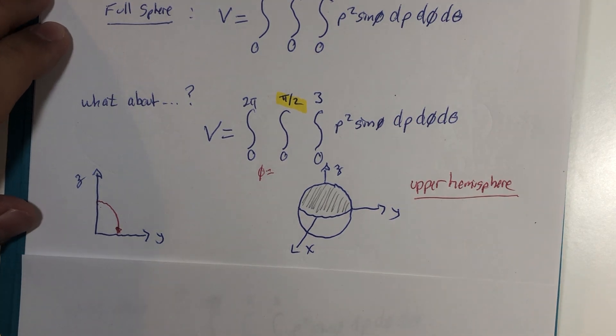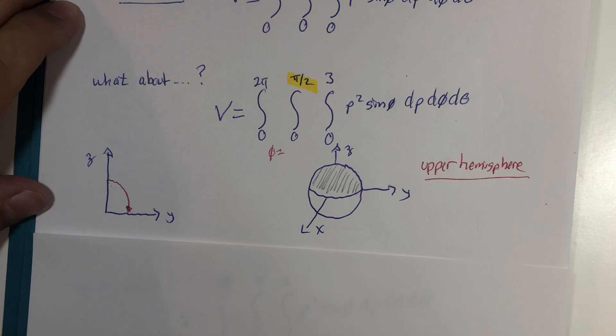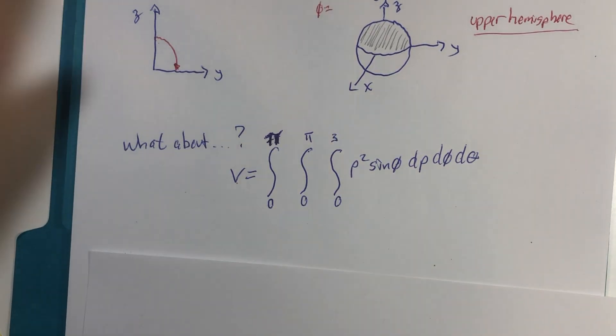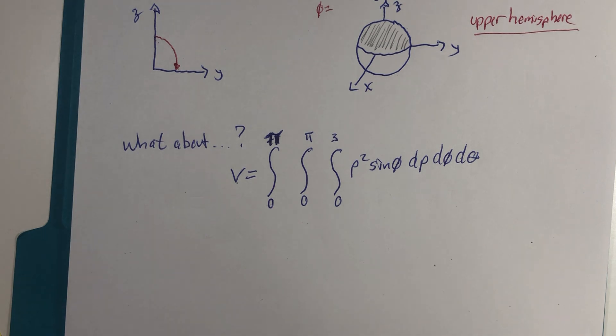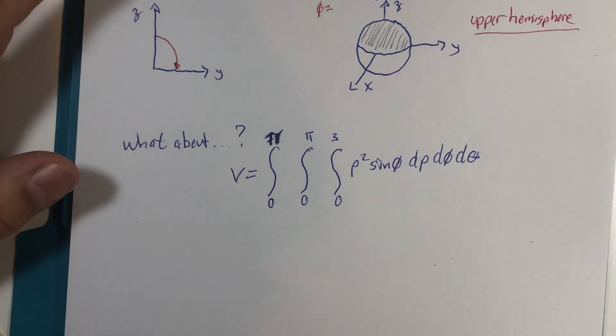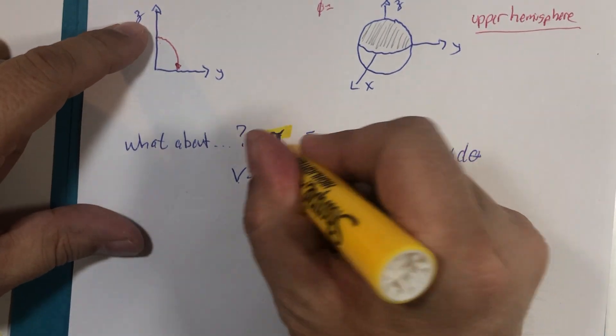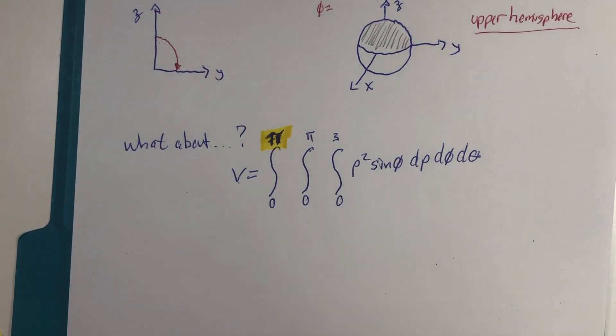Now almost finished. One more variation. What if I did not change the original angle phi but I change the value for theta?